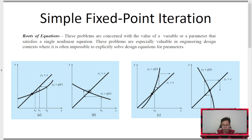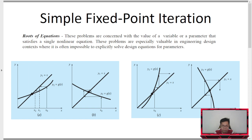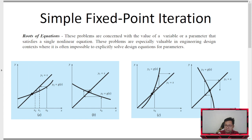I already discussed two methods: the bisection and the Regula Falsi, or the false position methods. Those methods are also known as bracketing methods, because we have brackets — a lower boundary and upper boundary — wherein our root lies somewhere in between. In bisection, we assume a new boundary at the middle, and in Regula Falsi, the new boundary is the intersection of the x-axis and the line connecting f(x) at the boundaries.